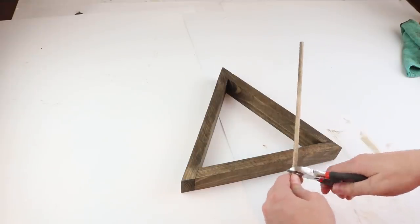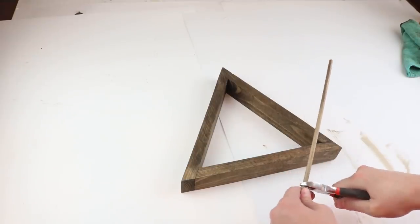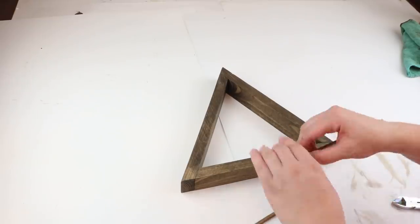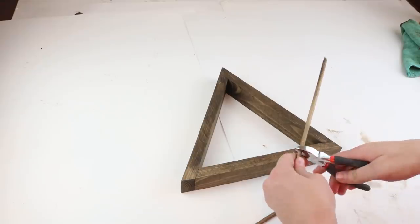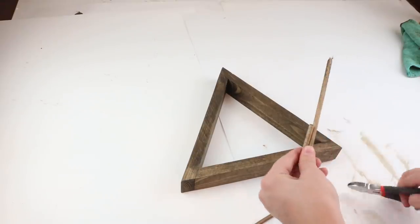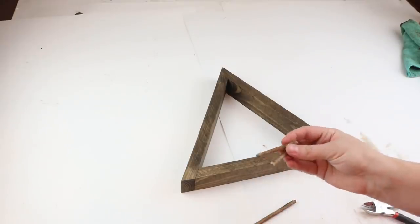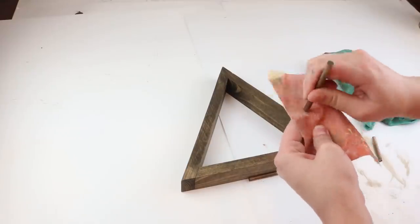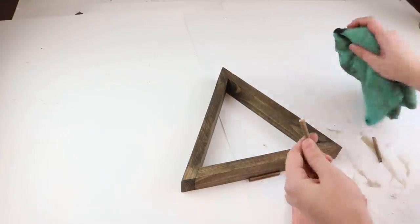We will cut it right in the middle so that there's a longer dowel in the middle and then two shorter ones on the ends, and this can hold like rings or bracelets or anything like that. Once those are cut you will want to sand them down and then stain it just over the part that you sanded.